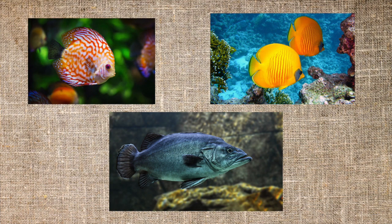In aquaculture, you often work with aquatic species — species that live in the water for the majority or all of their life. Some examples of aquatic species include fish, seaweed, crustaceans, and shellfish.